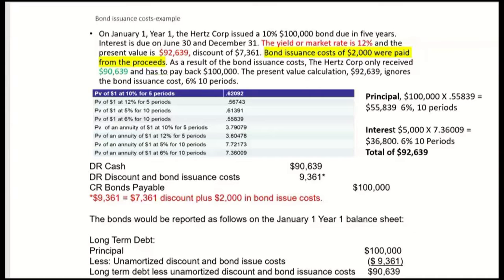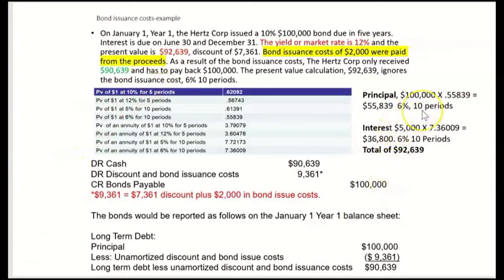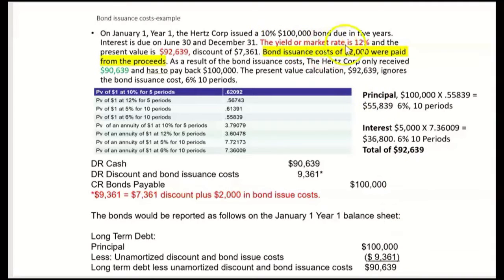The yield or market rate is 12%. They give us the present value: $92,639. Let's calculate it again. Principal: $100,000. Five-year bond with two interest payments = 10 periods. Market rate 12% with two payments per year = 6% per period. 0.55839 × $100,000 = $55,839 — that's the present value of the principal. For interest: $100,000 × 5% (semi-annual stated rate) = $5,000 per payment. Using 6%, 10 periods, annuity factor 7.36009 × $5,000 = $36,800 present value of all interest payments.